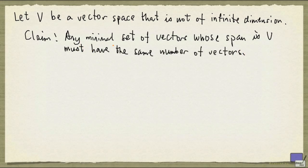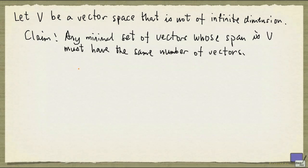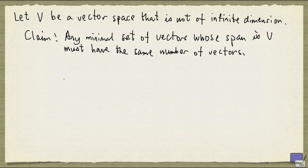Now, what does it mean for a set of vectors to be minimal? It means that if you take away any vector from the set, the resulting set no longer spans V. Minimal spanning sets are connected to the notion of linear independence, which we are going to define next.